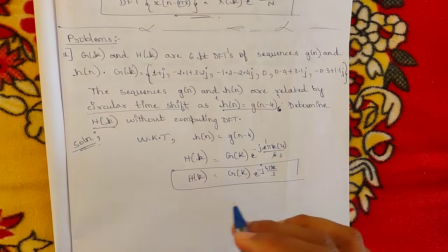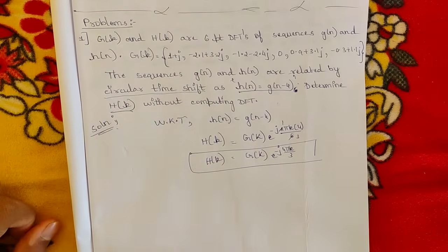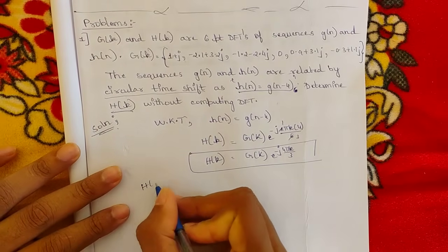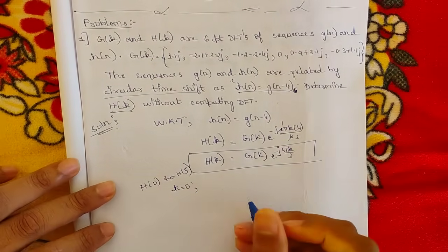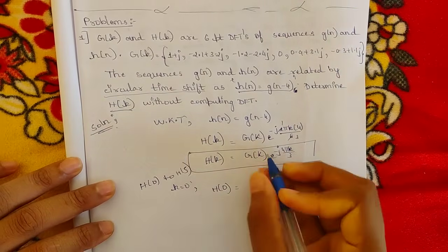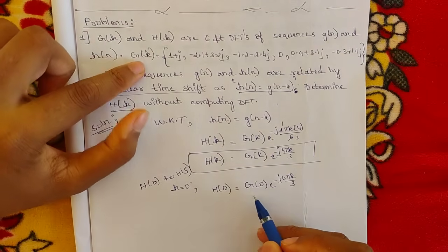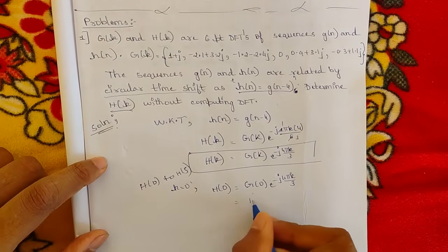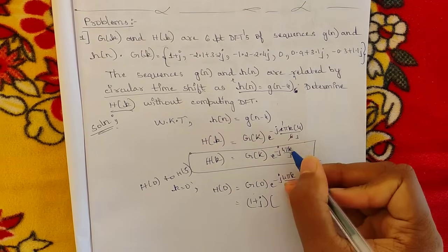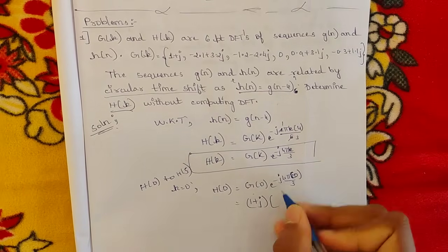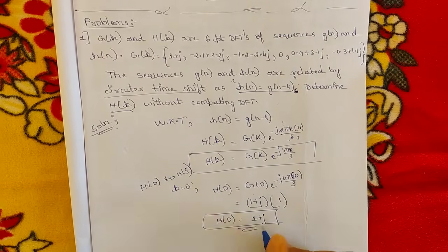We now find all six terms of the six-point sequence H(k) from H(0) to H(5). For k = 0: H(0) = G(0) · e^(−j4π·0/3). The exponent is 0, so e^0 = 1. G(0) is 1+j, so H(0) = 1+j.